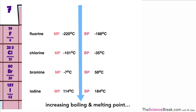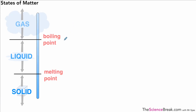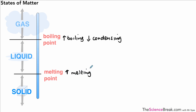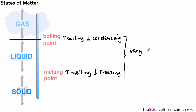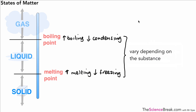To summarize: at the boiling point a substance will either boil or condense depending on whether the temperature is rising or falling. At the melting point, the substance will either melt or freeze depending on the direction of temperature change. Melting and boiling points vary depending on the type of substance, so you'll need to consider each substance based on the information you've been given. That's it for today — thank you for watching!